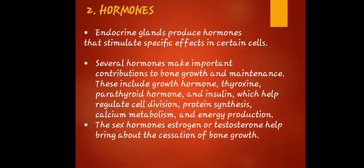Next, we have hormones. The endocrine glands produce hormones that stimulate specific effects in certain cells. Several hormones make important contributions to bone growth and maintenance. These include growth hormone, thyroxine, parathyroid hormone, and insulin, which help regulate cell division, protein synthesis, calcium metabolism, and energy production.